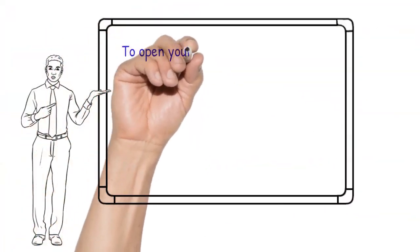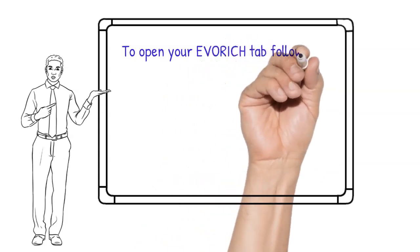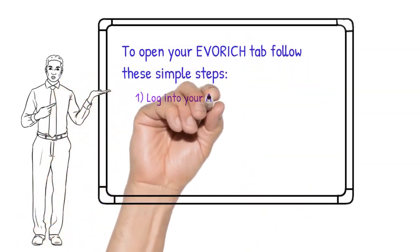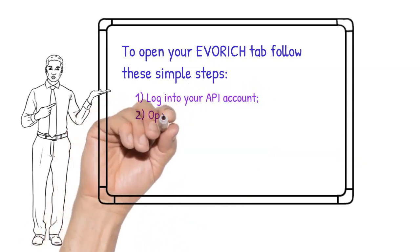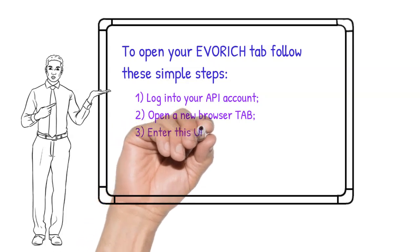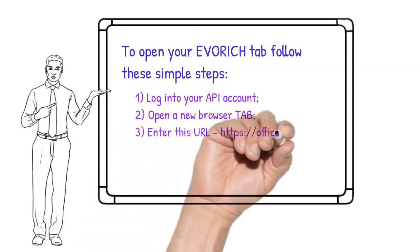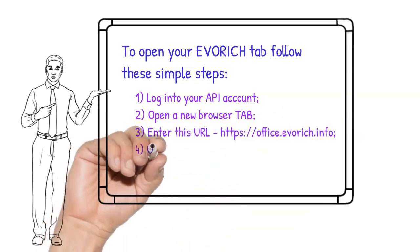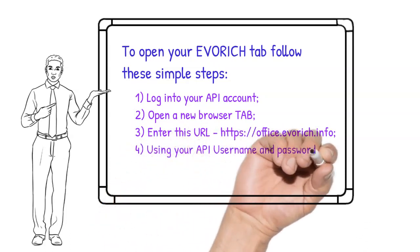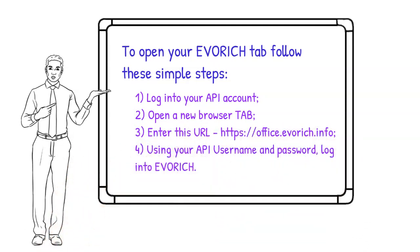If you haven't already done so, to open up your Evo Rich tab, follow these simple steps. First, log into your Academy of the Private Investor account using your username and password. Second, open a new tab in your browser. Third, enter the URL on the screen. Fourth, use your API username and password to log into the Evo Rich account. Please note you need both the API and Evo Rich tabs open in your browser when you log into Evo Rich for the first time.